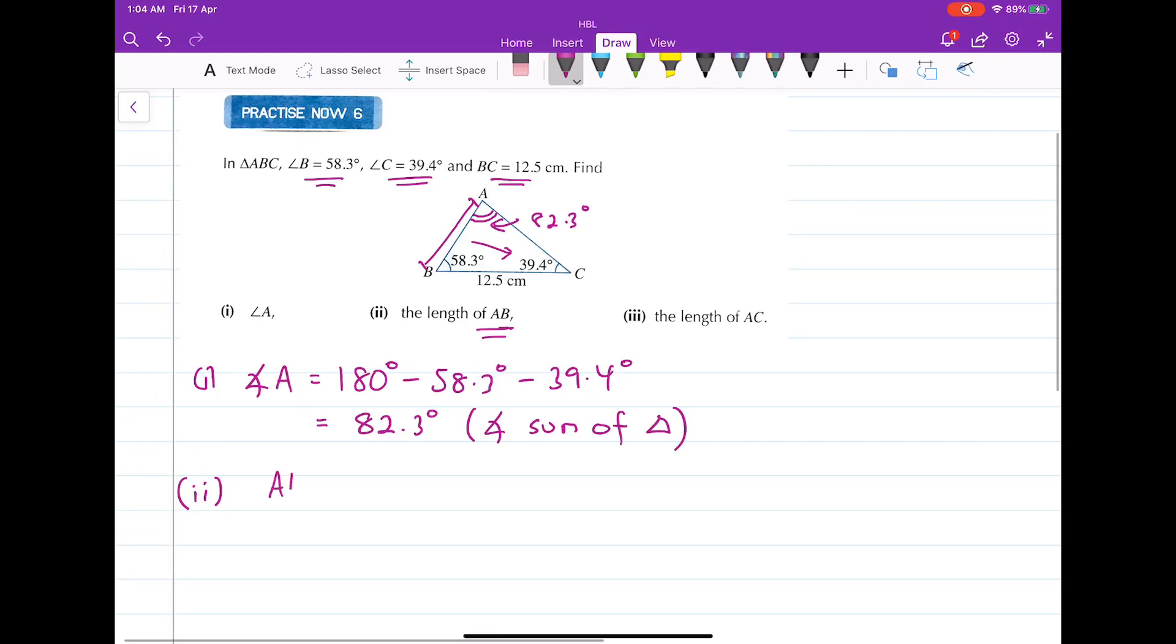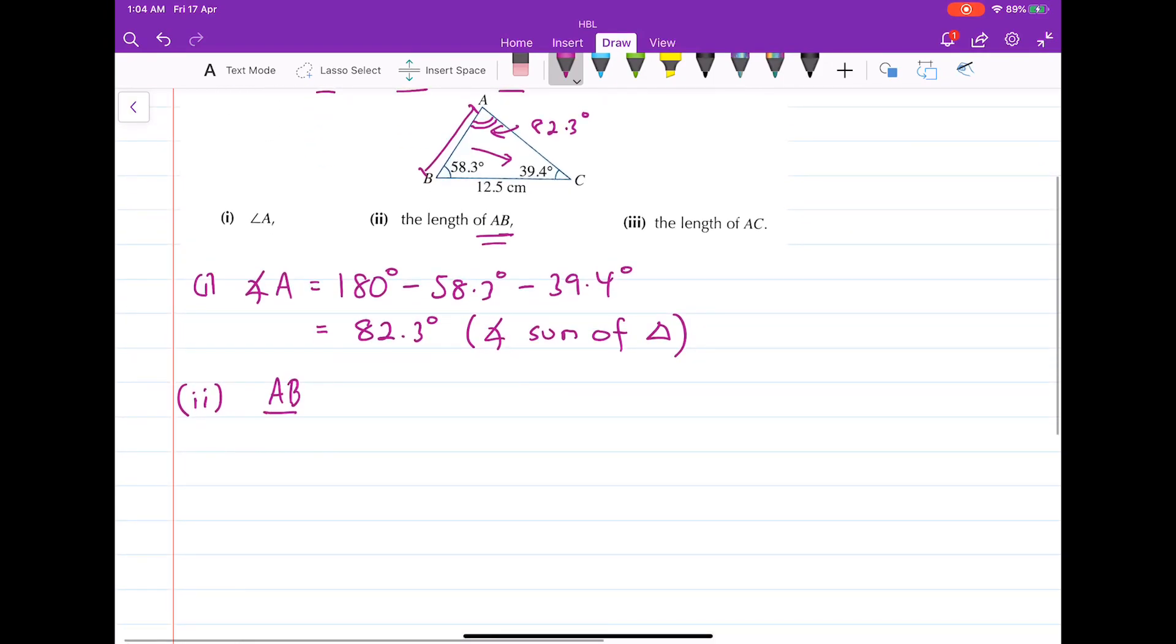So it goes like this: AB over the sine of angle C is equal to BC over the sine of angle A. Okay. So we're going to substitute all these values in and find AB. Let's do the substitution.